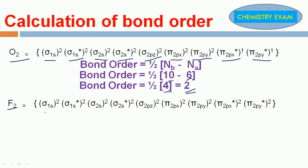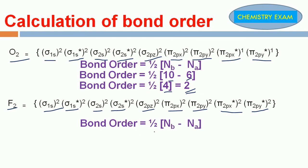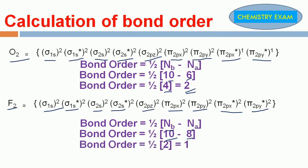Next, F₂. The electronic configuration is sigma 1s², sigma star 1s², sigma 2s², sigma star 2s², sigma 2pz², pi 2px², pi 2py², pi star 2px², pi star 2py². These are the electronic configurations for F₂. Bond order is 1/2 (NB minus NA). Bonding electrons: 10, anti-bonding electrons: 8. So 1/2 into 2 equals 1. The bond order for F₂ molecule is 1.